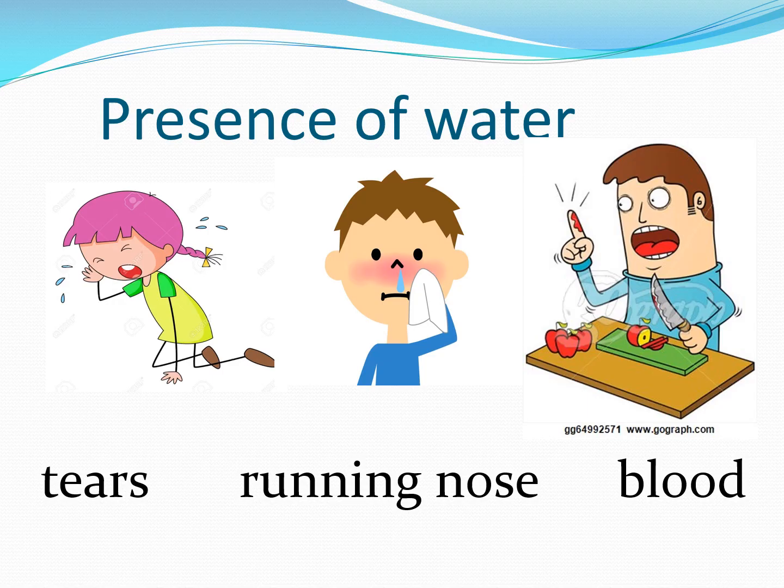When we cry, tears flow from our eyes. Our mouth waters when we see a tamarind pod. Our nose runs when we have a cold. When we get a cut, it bleeds. Tears, saliva, water running from the nose, and blood are present in our body. They are substances that flow and they contain water.